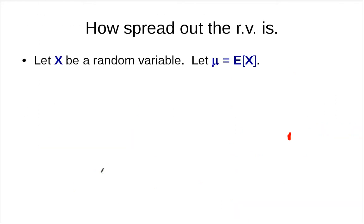So how can we quantify this? How do we quantify how spread out a random variable is? We will look at a random variable X and use the symbol μ to denote its expectation. We could use E[X], but then you have E[X] all around and it would be kind of confusing, so we use μ.